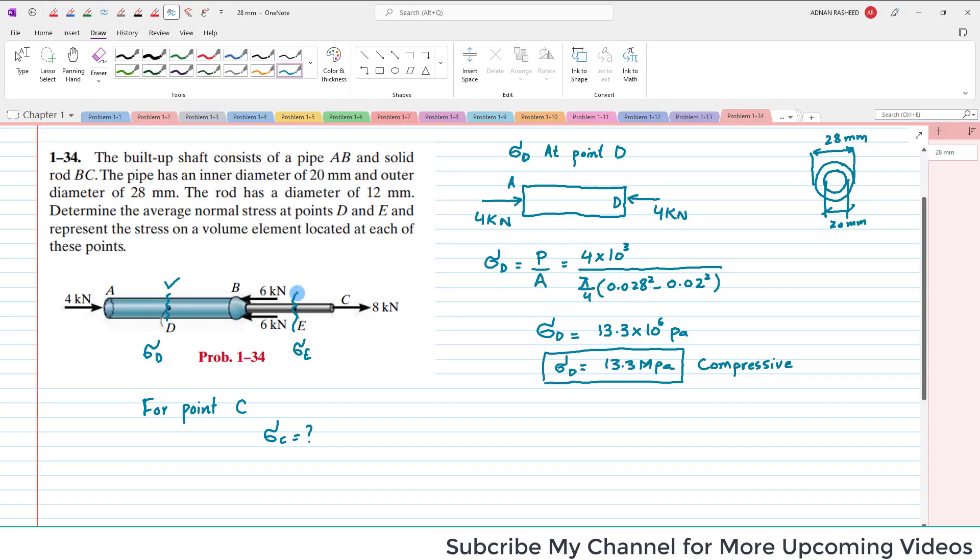For point C, when you cut this shaft, this is a solid shaft rod. At this point C there is 8 kilo Newtons. To the left side you can see there is 6 Newtons, 6 Newtons, 12 Newtons that is negative, plus 4, which equals minus 8. So minus 8 means this will be in the negative direction, so 8 kilo Newtons. You can see this is a tensile force.